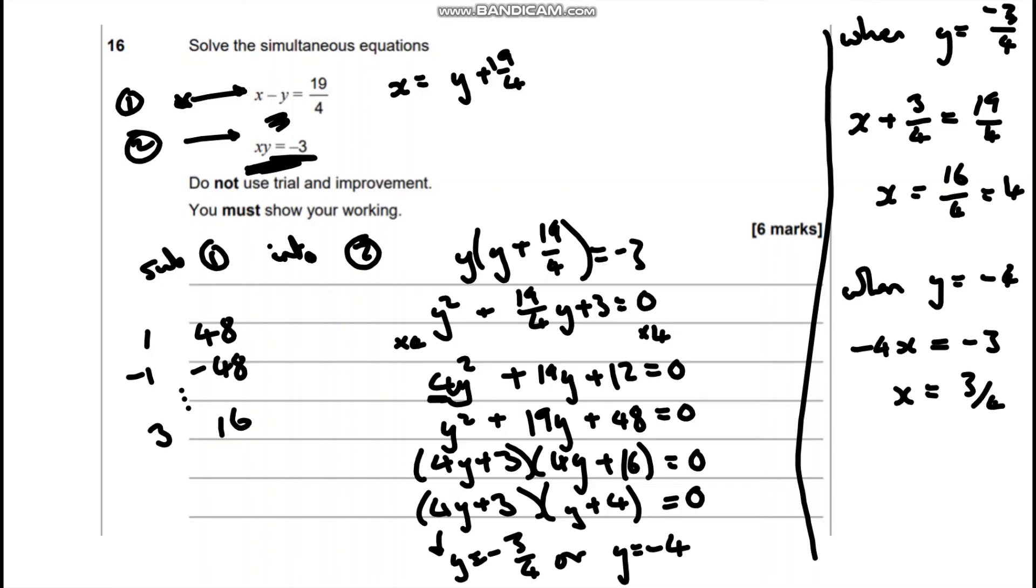And you should ideally write these pairs out at the end. So we're going to have x equals 4, y equals negative 3 quarters; x equals 3 quarters, y equals negative 4.